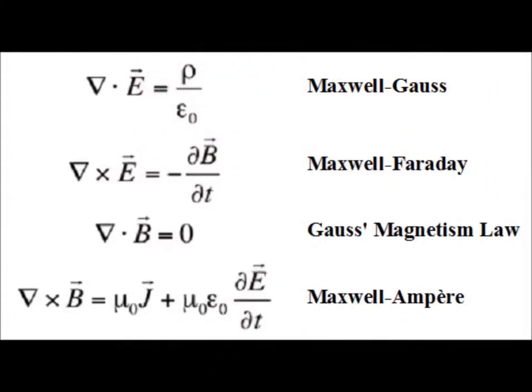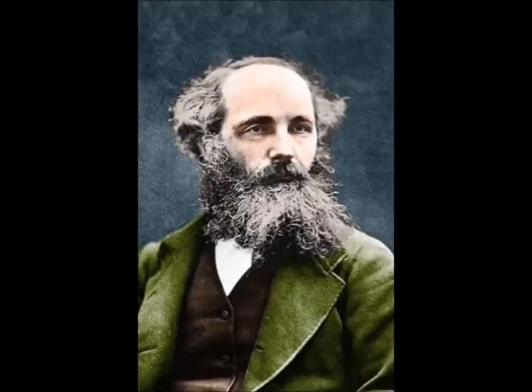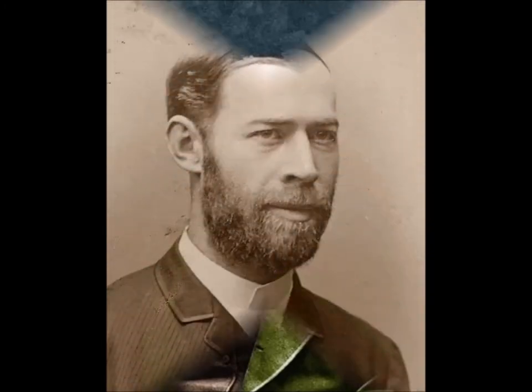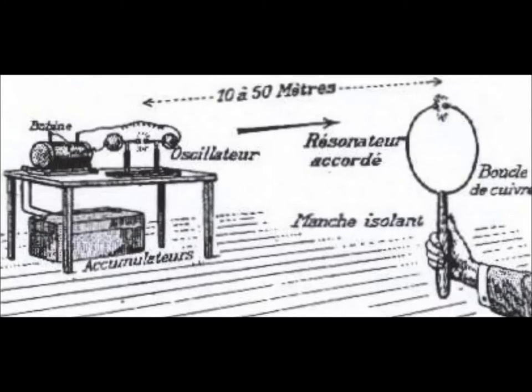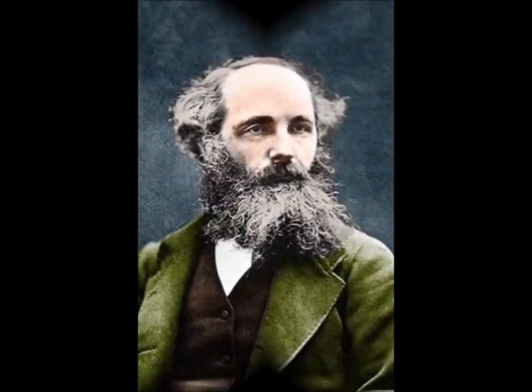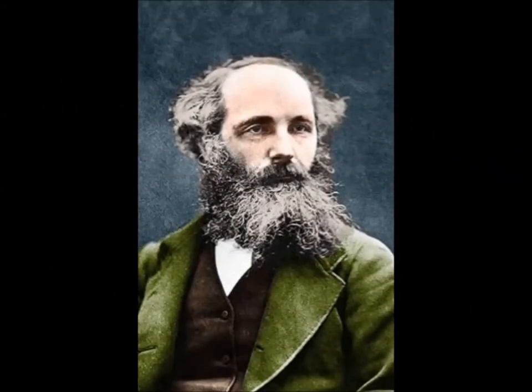The electromagnetic nature of light is a pure postulate of Maxwell. Hertz discovered the waves emitted by an electric circuit in 1887 and found that these waves propagate at the speed of light. Maxwell quite rightly deduced that all these waves are of the same nature, but unfortunately he supposed, in a totally arbitrary way, that light is electromagnetic in itself.